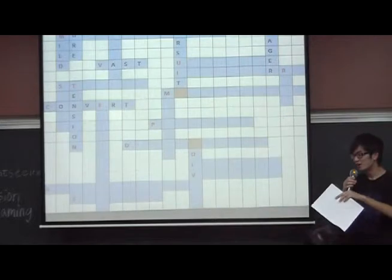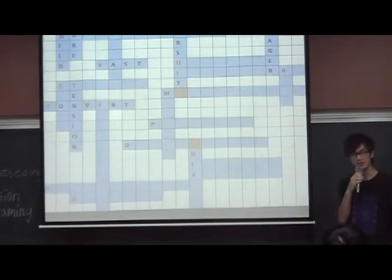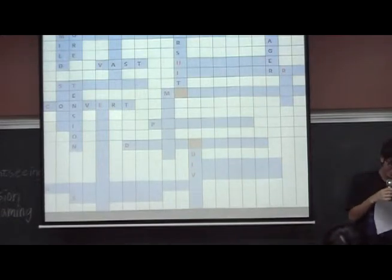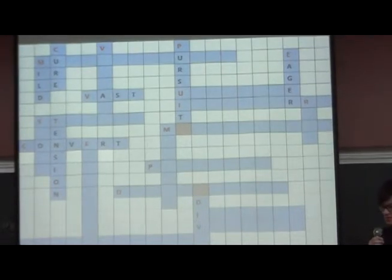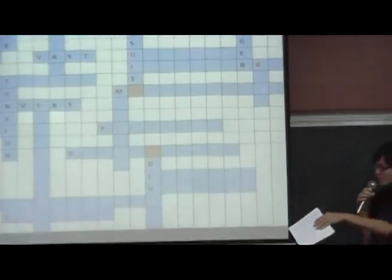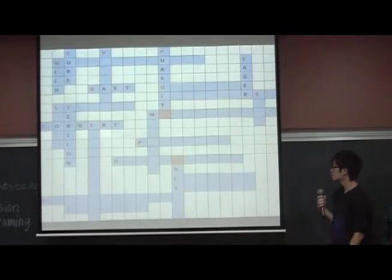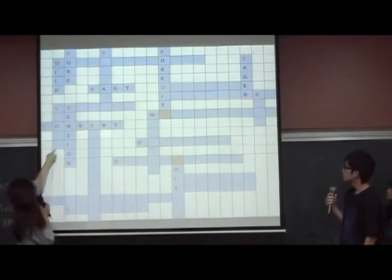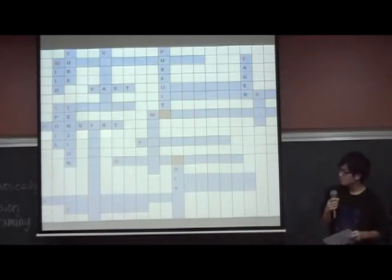From now on, the one who answered the question have to come off stage and point out where is it. Number eight is to change something good into something bad. Come on, please come off stage. Spoil. S-P-O-I-L. Great answer.